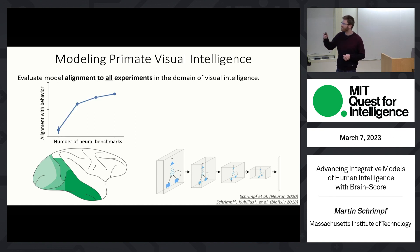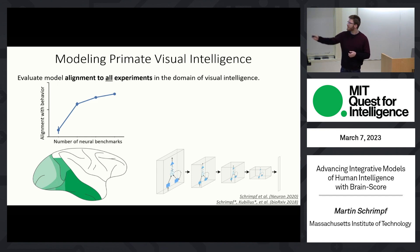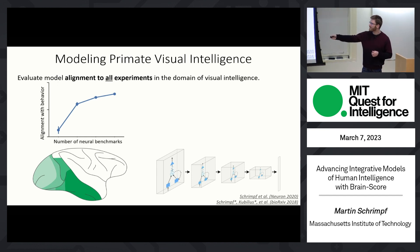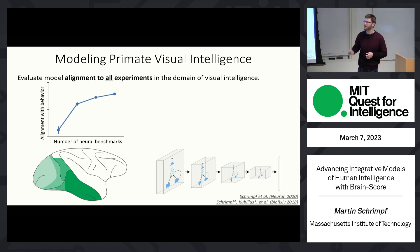In a more empirical form, this plot shows the number of neural benchmarks — testing how well models are aligned to the neural representations in the visual cortex. The y-axis shows how well the best model on those benchmarks is aligned to a neural benchmark. Basically, the more neural benchmarks we have, the better we can predict on an unseen behavioral benchmark how well a model is going to do.